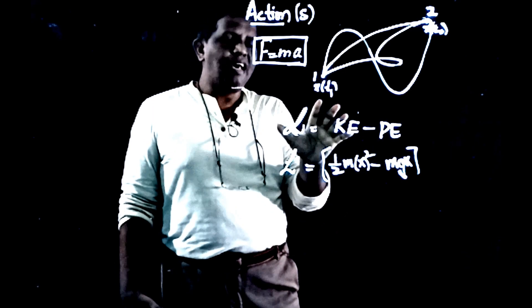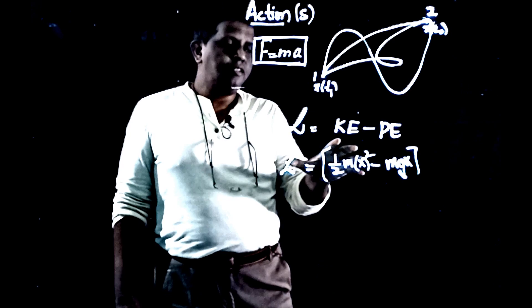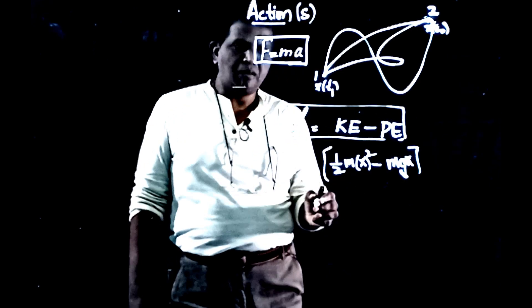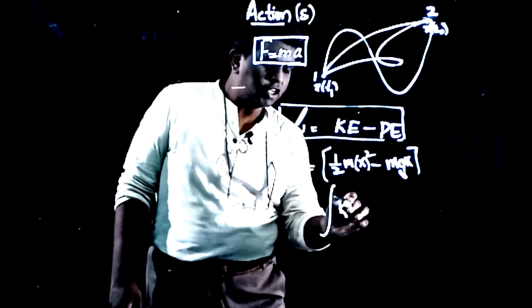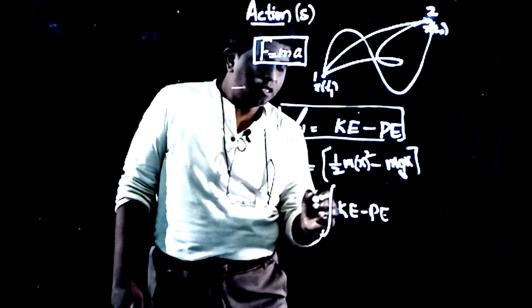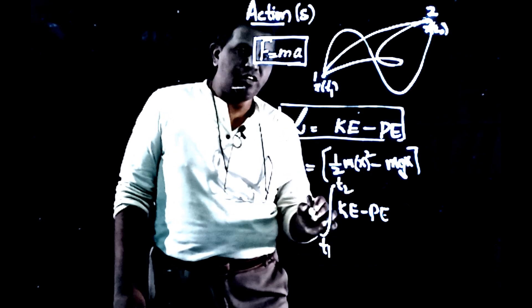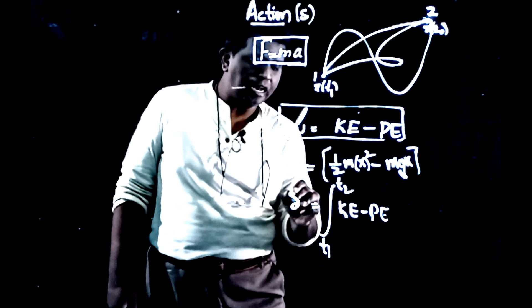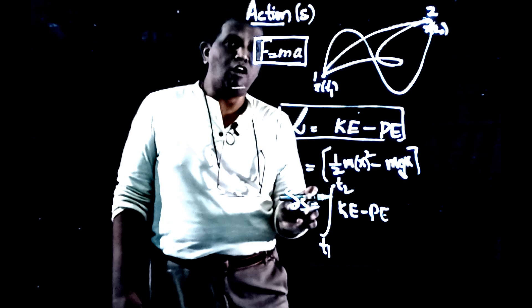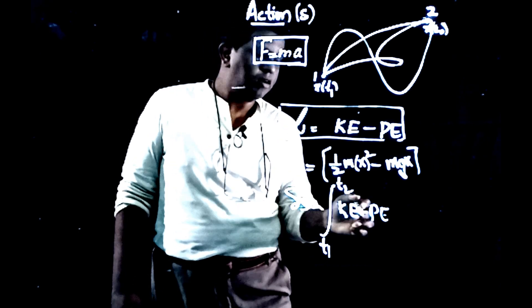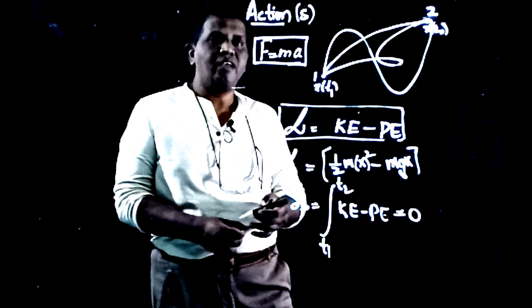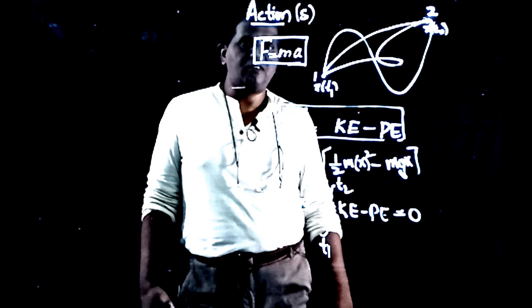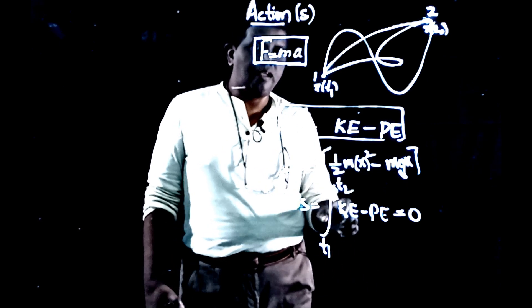This principle of least action is going to govern motion as Newton's law does. You may think this is a very simple equation — the integral of kinetic energy minus potential energy between T1 and T2 — and that the variation delta S of the action should be zero. You may think this is just a problem of maximum and minimum, but it is not that actually. It is something more than that.